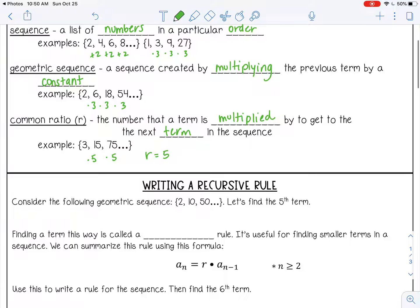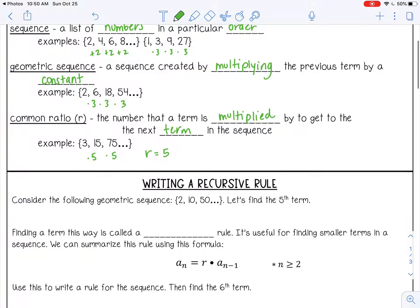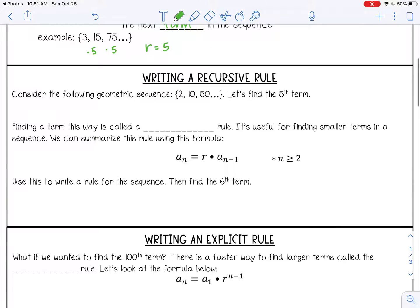All right. So there's two different ways to find terms in a geometric sequence. The first one is called a recursive rule. So consider the following geometric sequence: 2, 10, 50. Let's find the fifth term.